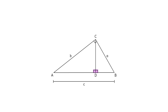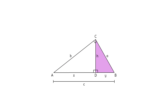These resulting angles are right. Let's label the altitude H. Can you see the three right triangles in this diagram? There's the large triangle we started with, then a triangle on the left with legs X and H and a hypotenuse B, and finally a triangle on the right with legs H and Y and a hypotenuse A.